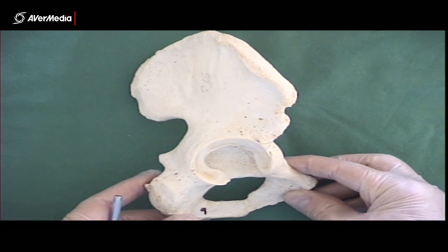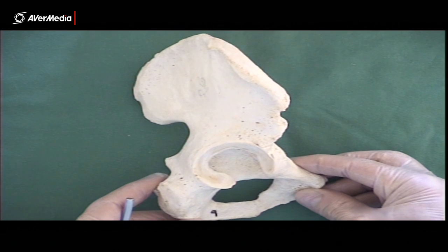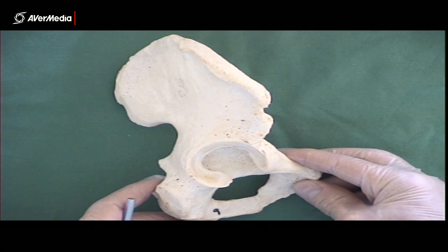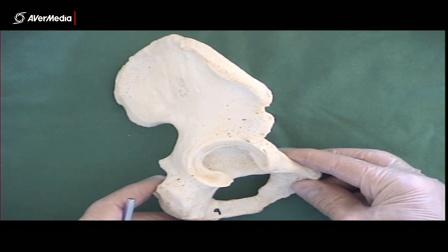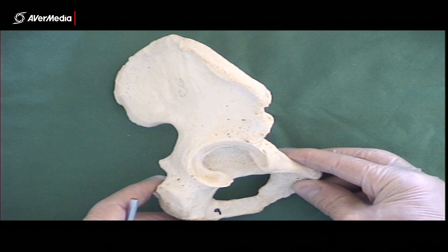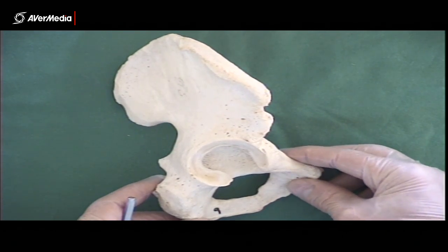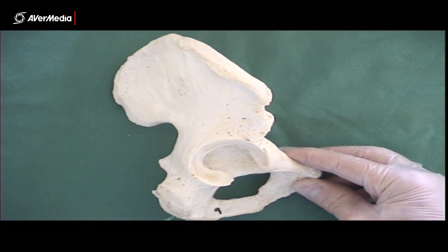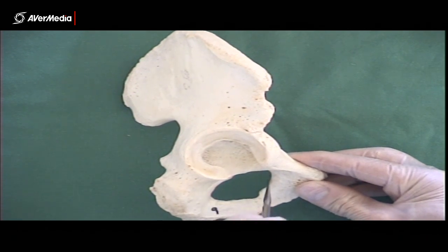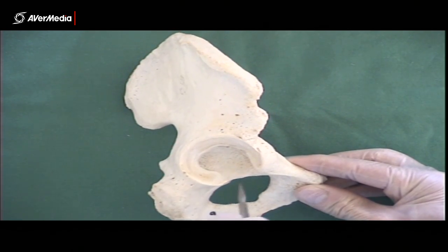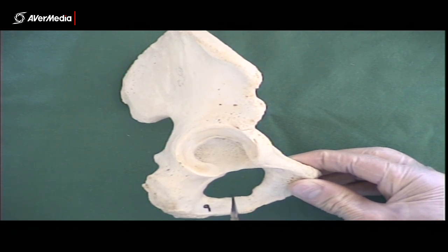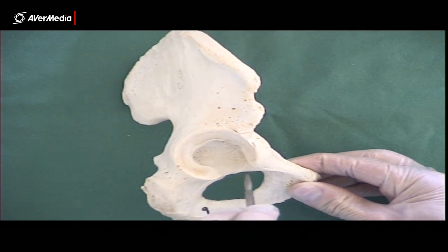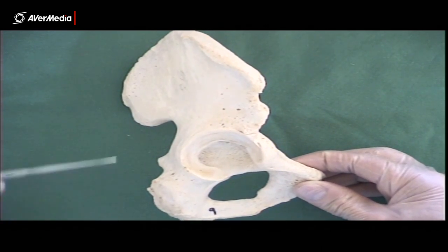Here we're looking at a hip — a lateral view of a right hip. The first things we're going to look for are features that are not just on one of the individual hip bones — ileum, ischium, or pubis — but extend over two or three of the bones. The first one is the obturator foramen, that's this big hole here, surrounded by the ischium and pubis. It's not on just one of those bones; it's in between two of them. You can't miss it — it's down the inferior end.